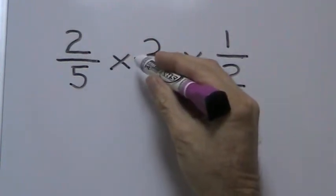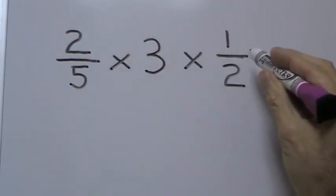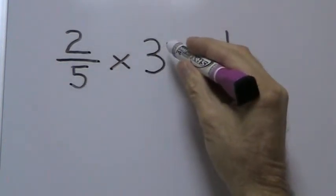In this problem, 2 fifths times 3 times 1 half, we're taking two proper fractions and multiplying it with a whole number.